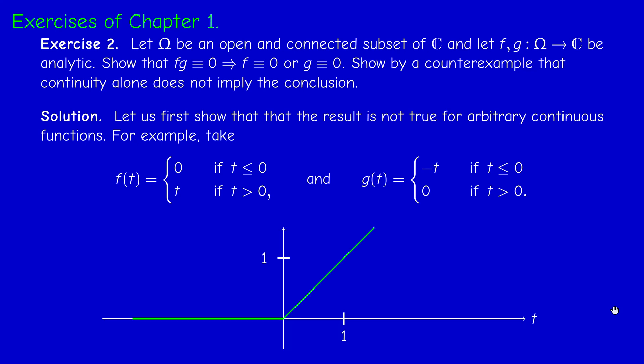So the graph of F is drawn here in green. Zero then t. It's continuous, of course. And the graph of G is simply the symmetric of the graph of F.